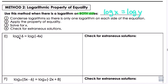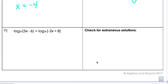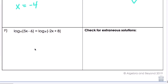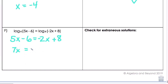Letter E: we have a log on both sides with the same base, so we can directly set the arguments equal: 16 equals negative 4x. Dividing by negative 4, x equals negative 4. Substituting into the original confirms it checks out. Letter F: again two logs equal to each other with the same base 4. So 5x minus 6 equals negative 2x plus 8. Adding 2x gives 7x, adding 6 gives 14, so x equals 2. This also checks out.